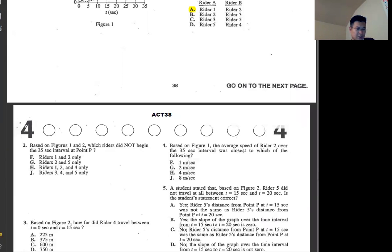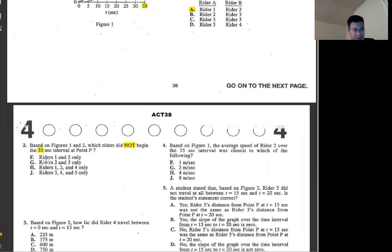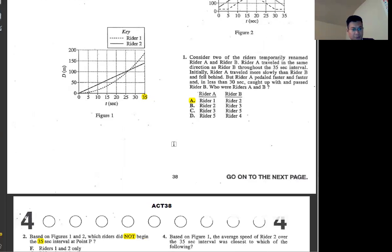Question number two, based on figure one and two, at the beginning of the 35 second interval at point P. Writer one and two, at 35 seconds, if you see the first one, seems like writer two seems like 140 and then the other one is around 80. Around 35-40 meters difference. So one and two is okay, so we can eliminate everything without one and two. So F, G, H, or J is the answer.